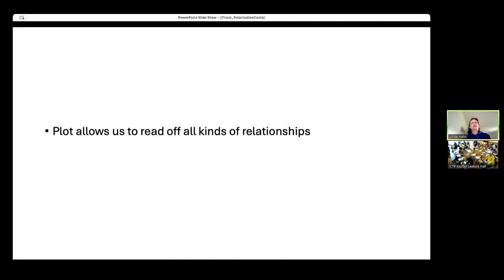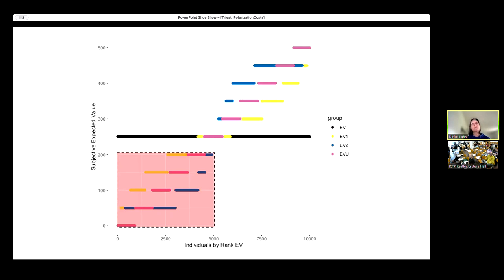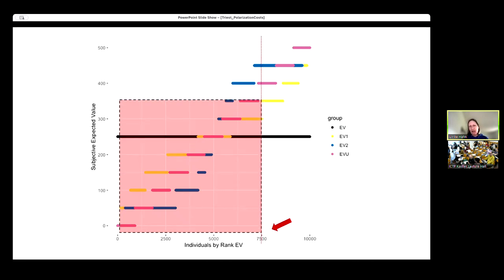Now this is useful because these plots allow us to read off all kinds of relationships. We can see immediately, for example, that in this green region are going to be the individuals in the population who think this prospect is worth more than it actually is, and these guys down here are the people who think it's worth less. We can take a particular asking price for this prospect and see what population proportion assigns a subjective value below the asking price.